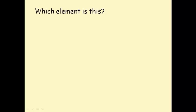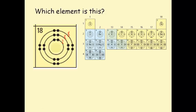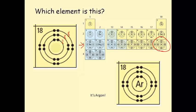Which element is this? It has an atomic number of 18, which means it has 18 electrons. Counting them up: first shell has 2, second shell has 8, and the third shell also has 8 — totaling 18 electrons. It has 3 electron shells, so you would find it in period 3. It has 8 electrons in its outer shell, which means this element is argon.